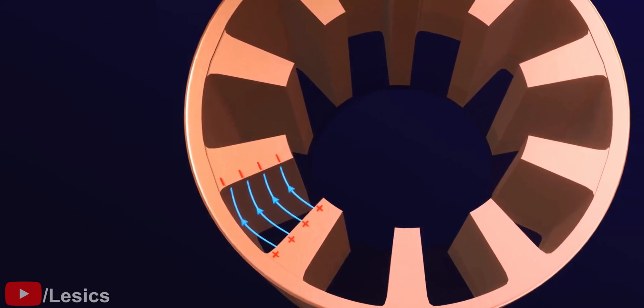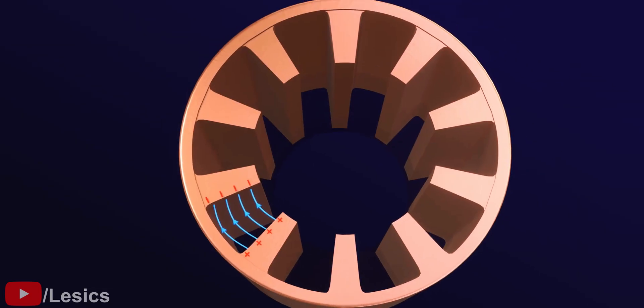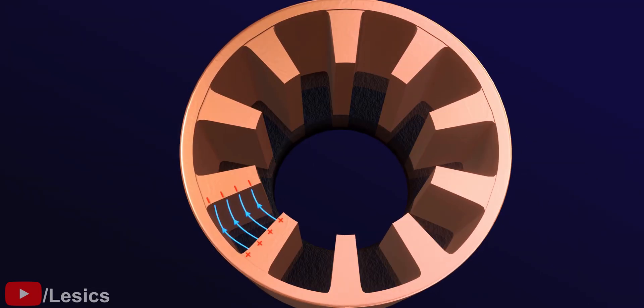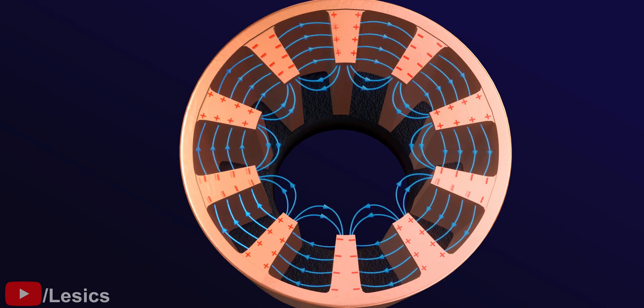As we learned in the beginning, the electric field inside any metal should be zero. This condition is possible only with the charge distribution as shown. Here, using vector addition, we can prove that all the electric field lines are getting cancelled inside the metal body.